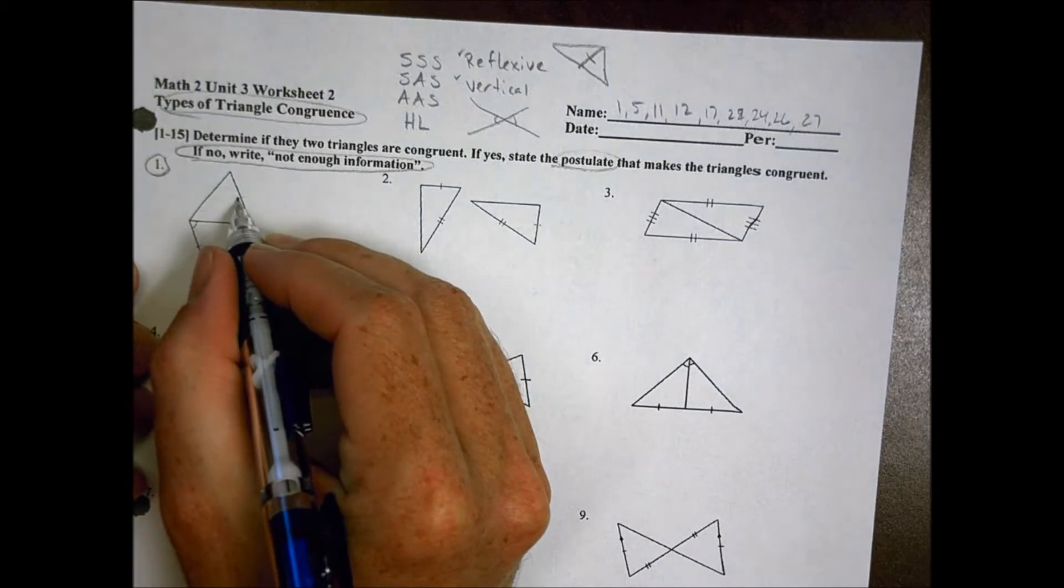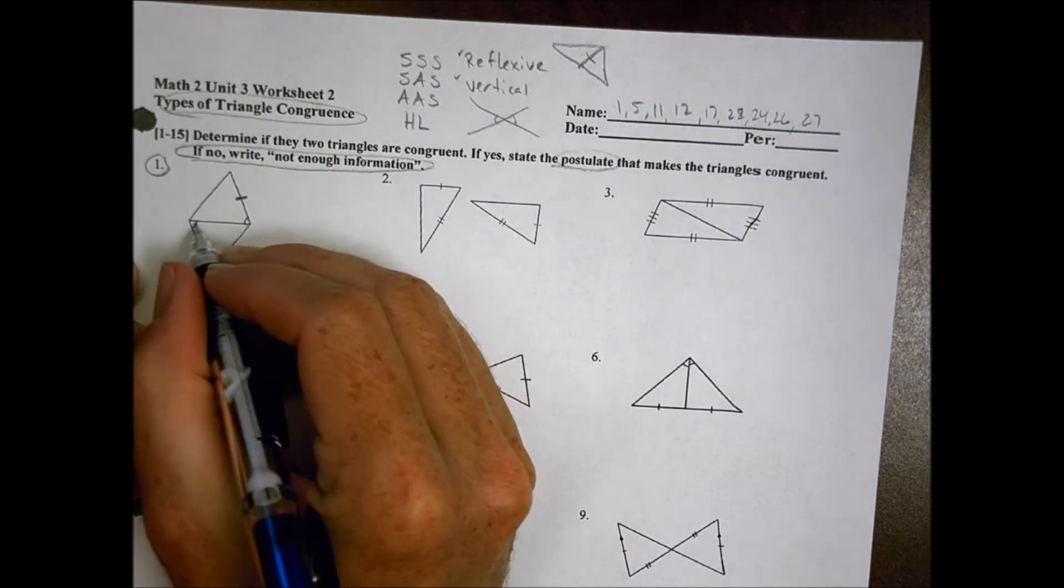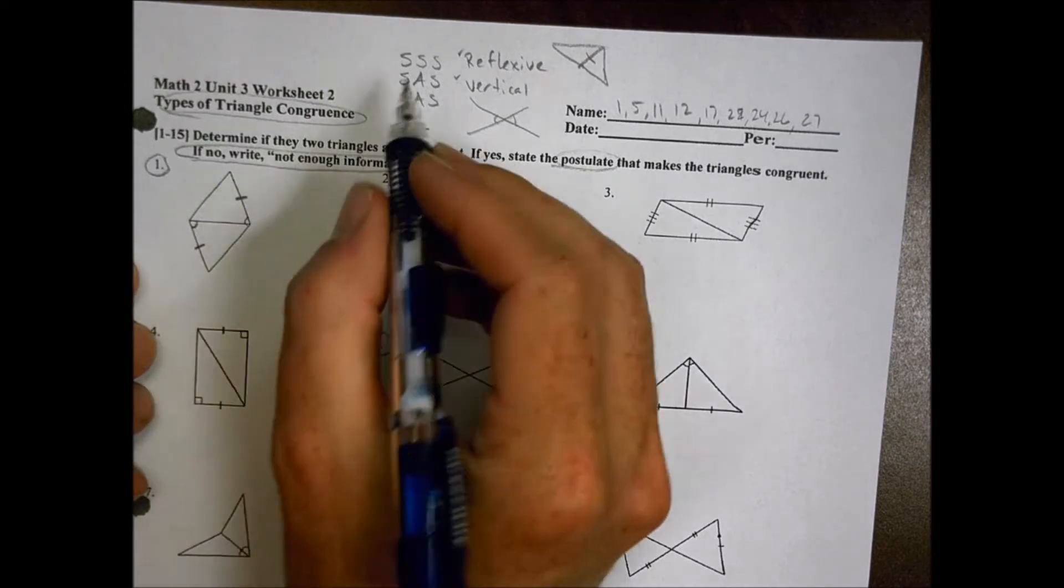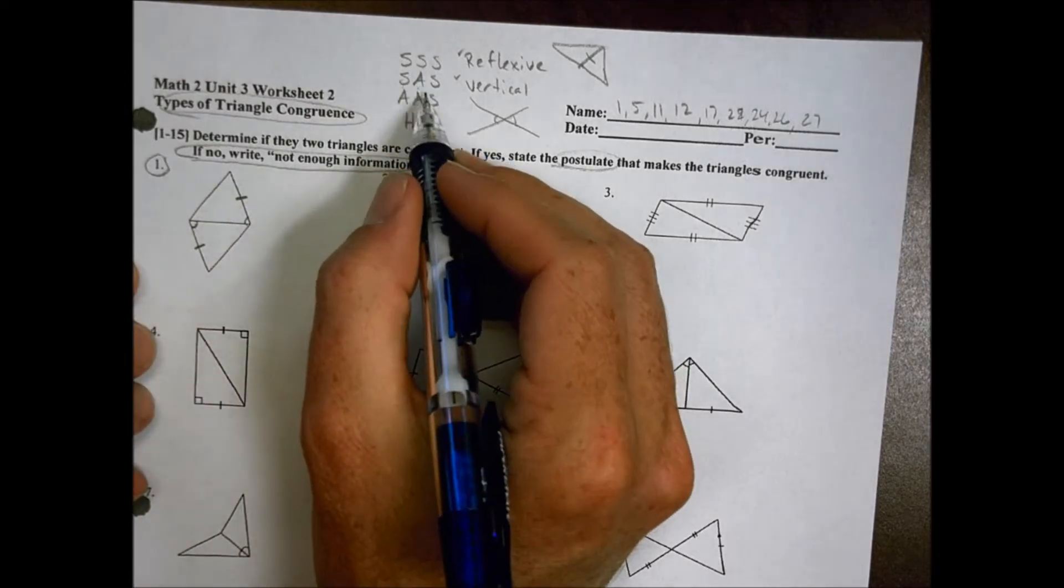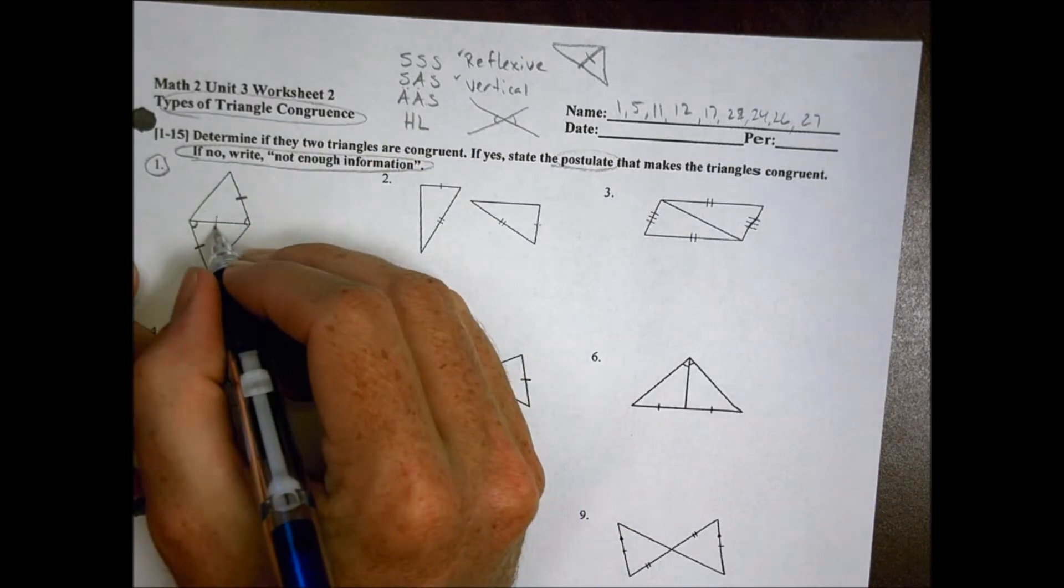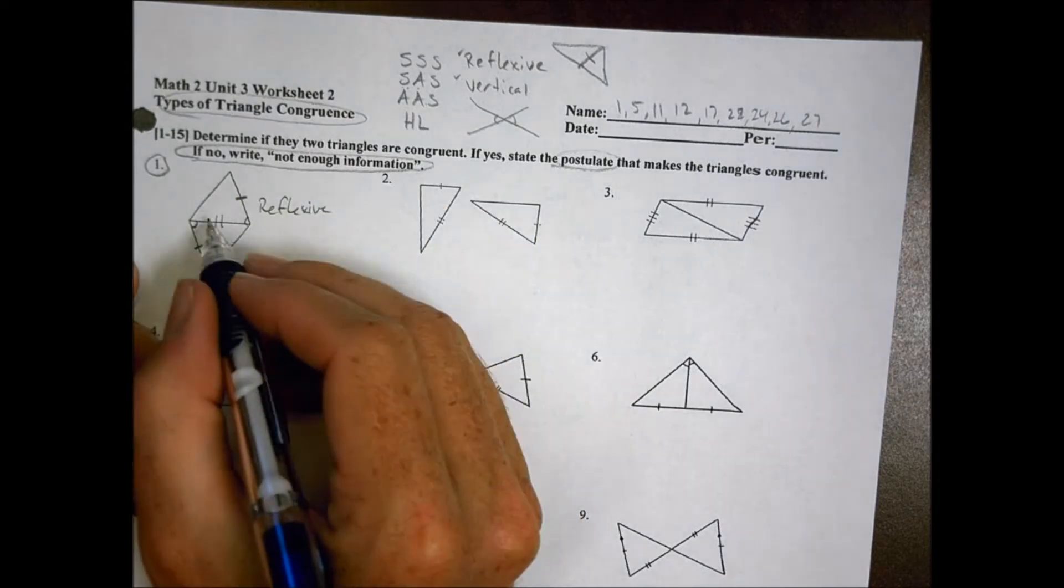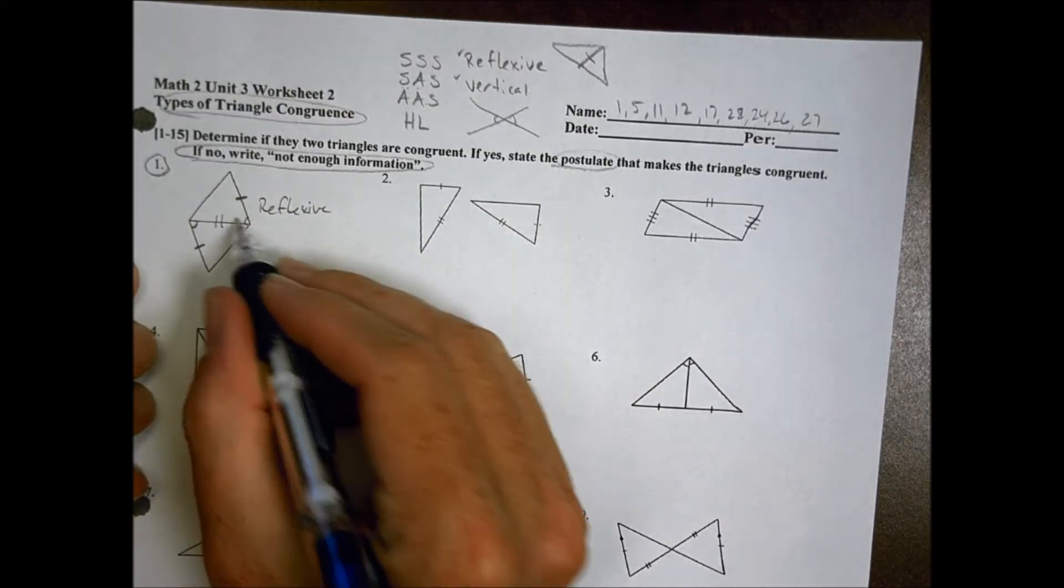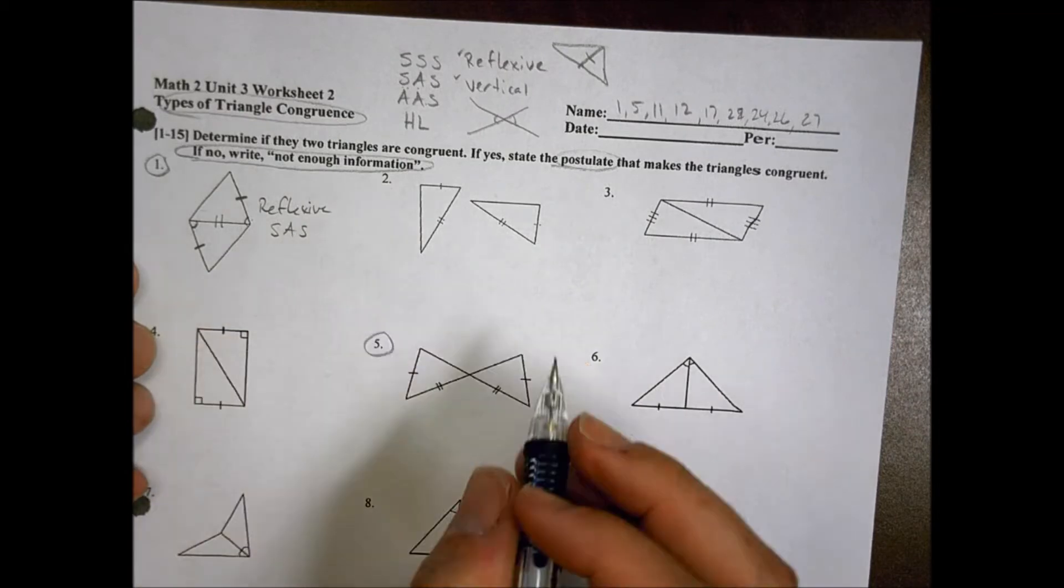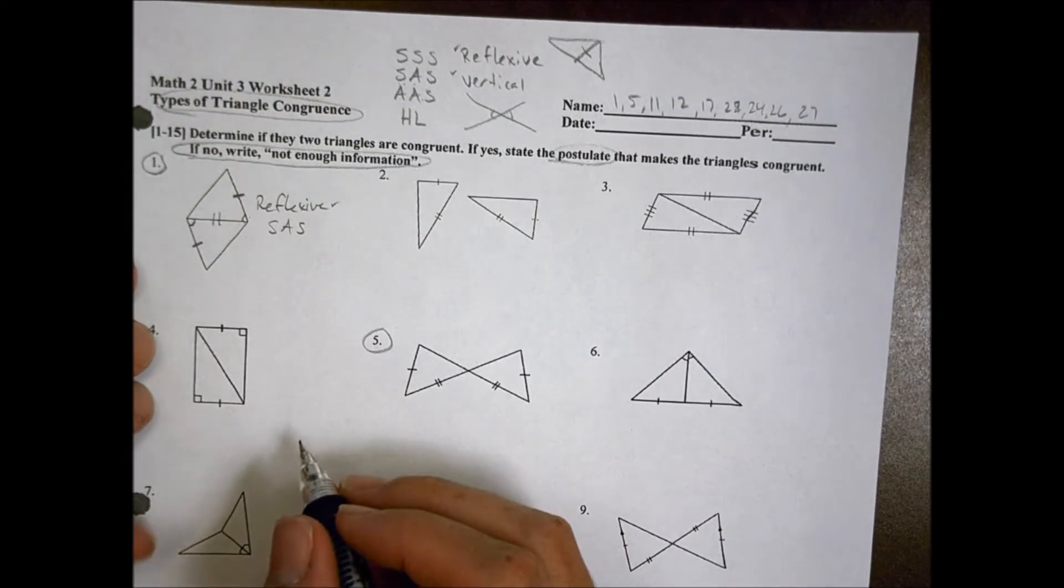So for this first one, for example, I have a side and a side. I have an angle and an angle. So I can look and I have a side and angle. So I'm looking at this one or that one. Because of this line right here being reflexive, using the reflexive property there, that would allow me to then say it's a side angle side and the triangles are going to be congruent. But I have to say that it's reflexive before I can get to side angle side.